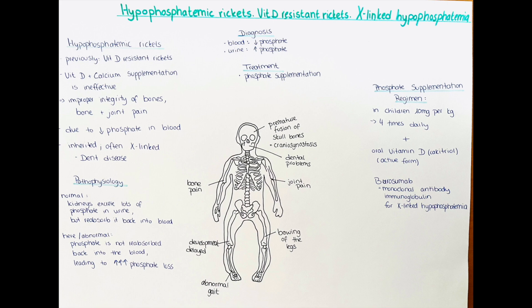Now let's mention one high-yield point from the pathophysiological aspect of the disease. Normally, our kidneys excrete a lot of phosphate in the urine, but then reabsorb it back into the blood via the tubules. However, in hypophosphatemic rickets, the kidneys do not reabsorb the phosphate sufficiently back into the blood. Regarding diagnosis, in a blood test we will see low levels of phosphate, because a lot of phosphate is excreted in the urine by the kidneys. Hence, if we check the urine for phosphate levels, it will be high.